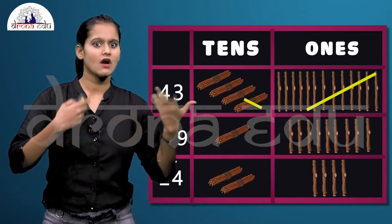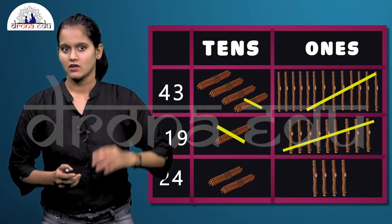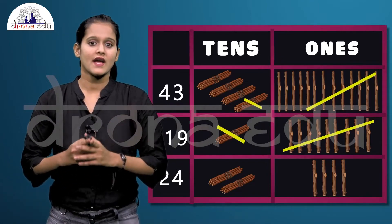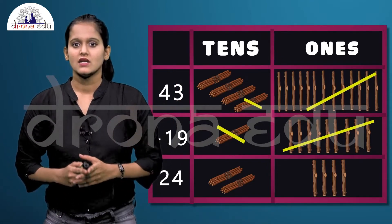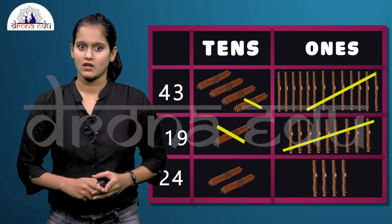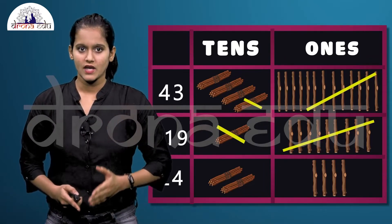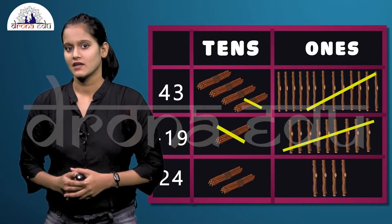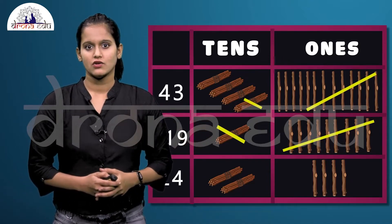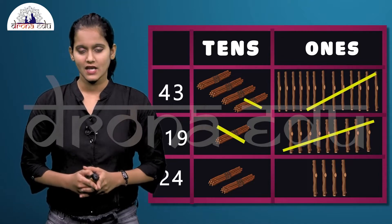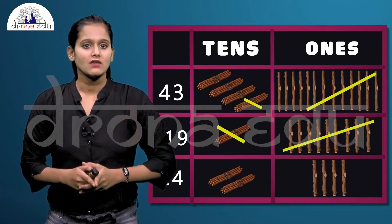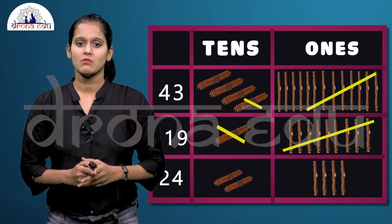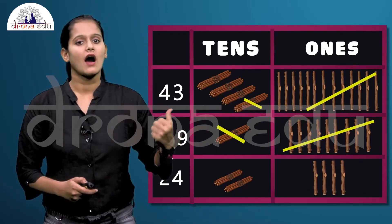In the tens place, one bundle was borrowed, so three bundles remain. One bundle is subtracted from those three, leaving a difference of two bundles. So subtracting 19 from 43 gives two bundles and four sticks, meaning 24 sticks are undamaged.